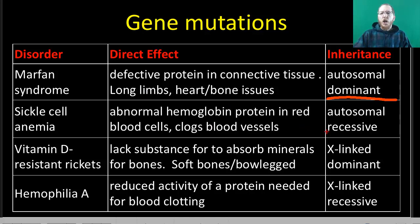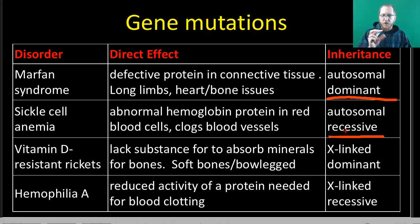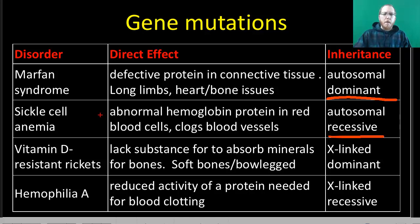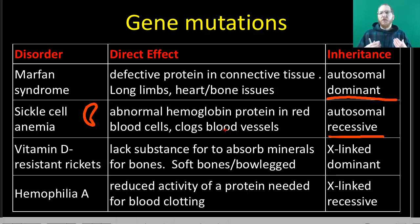Sickle cell anemia is autosomal recessive because you have to have two sickle cell alleles to get the disease. If you're a carrier or heterozygous, or homozygous dominant for healthy, you won't suffer from sickle cell anemia. What happens is you get misshapen, sickle-shaped blood cells that die earlier, leading to a lack of blood cells and clotting, which leads to organ failure. Without treatment, this can kill you by the end of your teens.